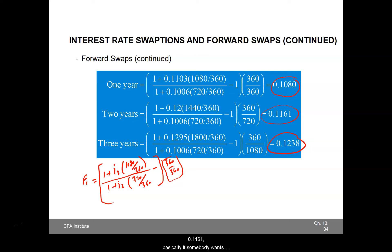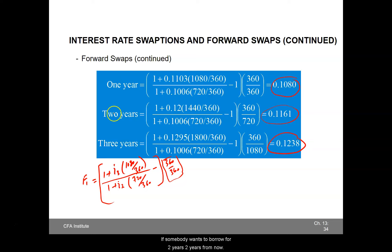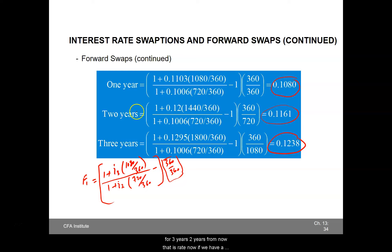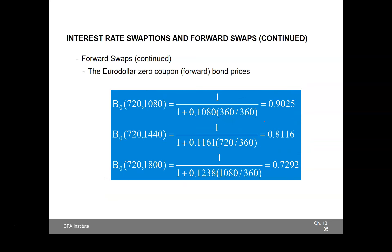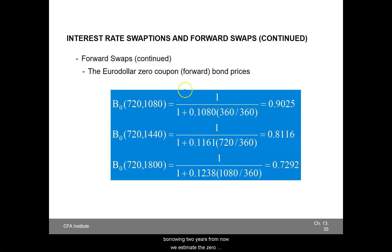So basically, if somebody wants to borrow for 1 year 2 years from now, the rate is 10.8%. For 2 years 2 years from now, it is 11.61%. For 3 years 2 years from now, it is 12.38%. Looking at these rates, they are increasing as maturity increases, indicating an upward sloping yield curve. Using these estimated forward interest rates, we now estimate the zero-coupon forward bond prices — not spot prices, but forward prices, i.e., the price of a bond 2 years from now.